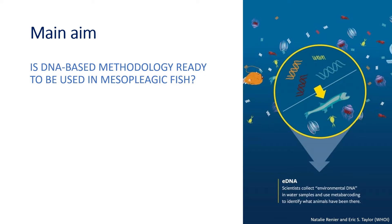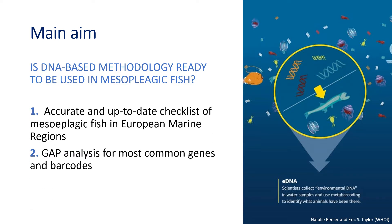This study is focused on assessing the availability of genetic material for metabarcoding studies focused on mesopelagic fishes in Europe. The first step has been to create a complete and up-to-date checklist of mesopelagic fish species in the study area — very important because metabarcoding studies rely on the accuracy and completeness of the database they use. The second step has been the gap analysis itself.